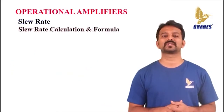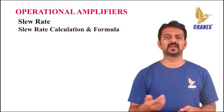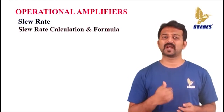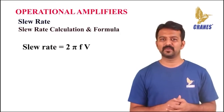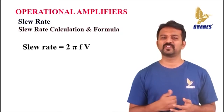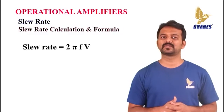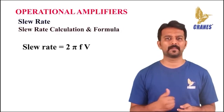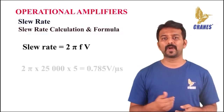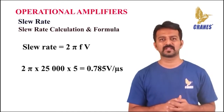Let us look at the slew rate calculation and the formulas related to it. It is relatively easy to calculate the slew rate required for a particular application from the knowledge of the maximum voltage and frequency required. To give distortion-free operation, the slew rate equals 2πFV, where slew rate is measured in volts per second, F is the highest signal frequency in hertz, and V is the maximum peak voltage of the signal. As an example, an op-amp required to amplify a signal with a peak amplitude of 5 volts at 25 kilohertz needs a slew rate of at least 2 × π × 25000 × 5, which is 0.785 volts per microsecond.